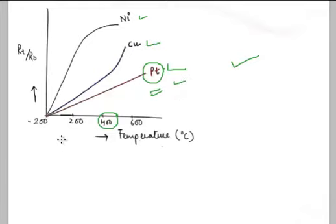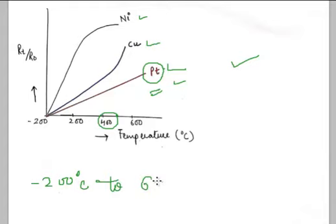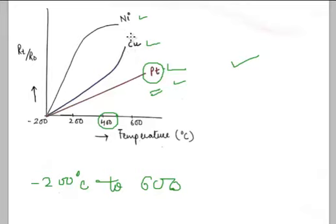Platinum's linearity holds over a wide range — from −200°C to as high as 600°C — as seen in the graph. After comparing all three metals, we arrive at the conclusion that platinum is the obvious choice for the fabrication of a Resistance Temperature Detector.